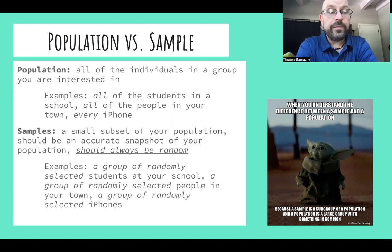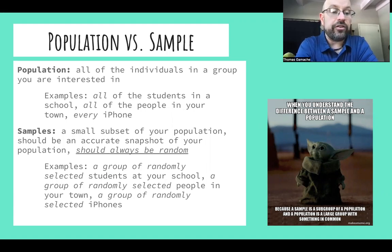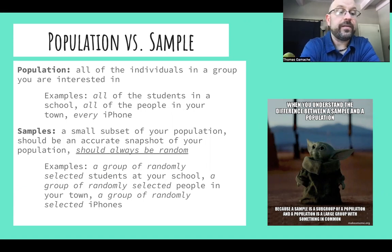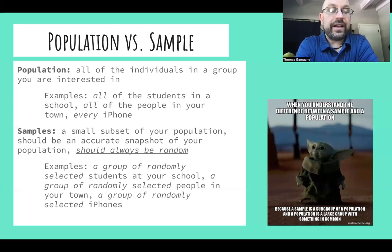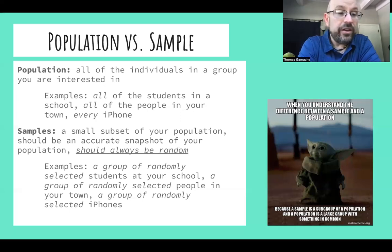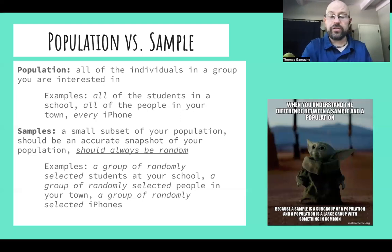A sample is a small subset of your population. It should be an accurate snapshot of your population and it should always be random. We want things to be random in statistics. Examples of samples would be a group of randomly selected students at your school, a group of randomly selected people in your town, or a group of randomly selected iPhones. A sample does not represent every single member or item within each population — it's a small group within each population we're interested in.